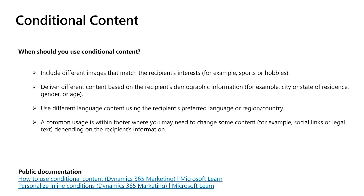So when should a marketer use conditional content? You should use it when you would like to use different images that match the recipient's interests — for example, what is their favorite football team. Or when delivering different content based on demographic information, like which city males older than 40 years old live in. You can use different language content based on the preferred language or country for the recipient list. And one common use is within the footer, where you may need to change content depending on recipient information, like legal texts or social links.